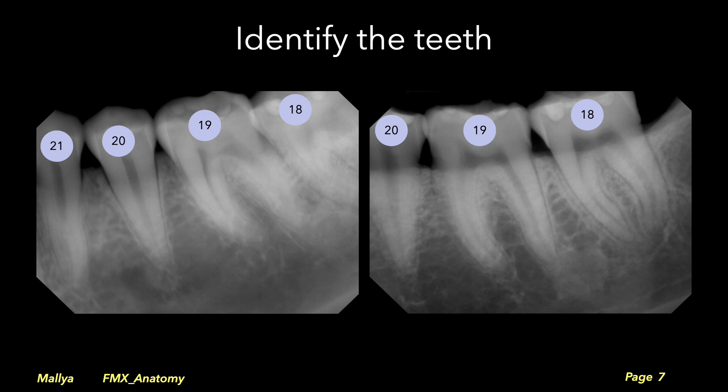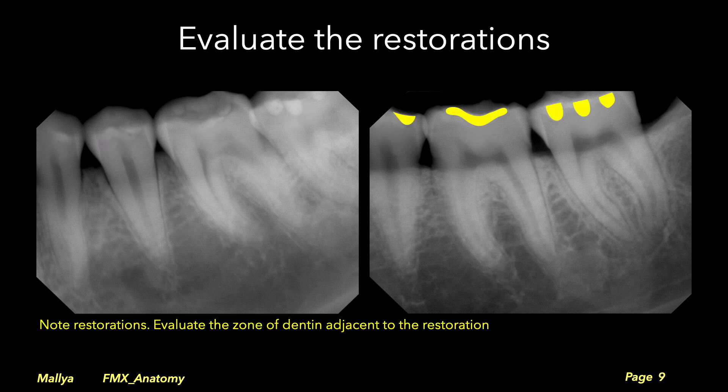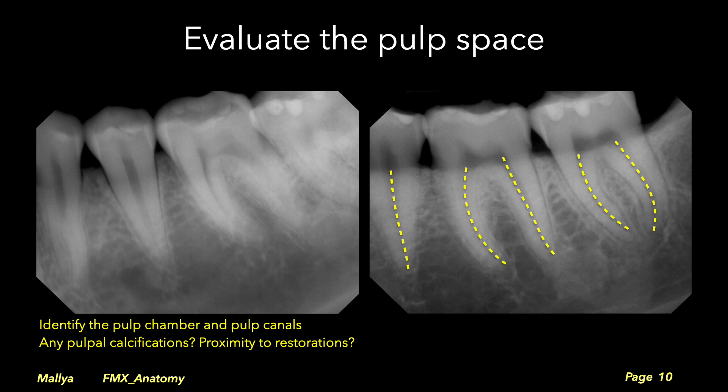We start by identifying the teeth, evaluating the morphology of the crowns, evaluating restorations, and examining the zone of dentin adjacent to the restorations. Next, identify the pulp space and trace the pulp canals from the pulp chambers to the apical foramen. Assess for calcifications in the pulp and any localized areas of dilation that may suggest resorption.